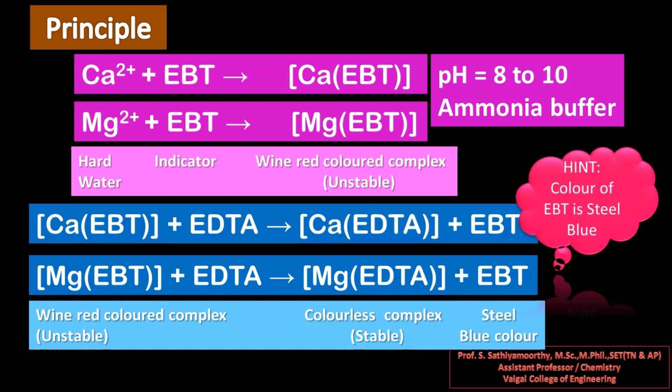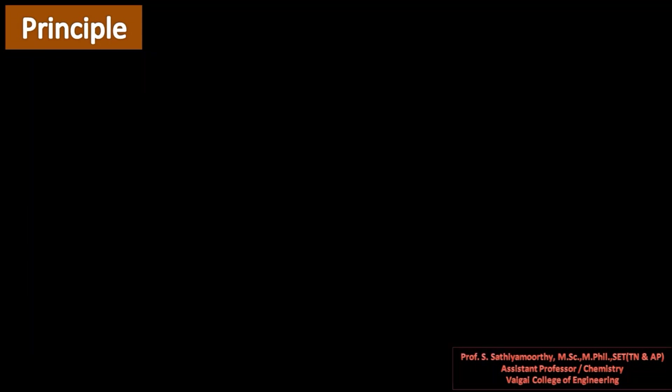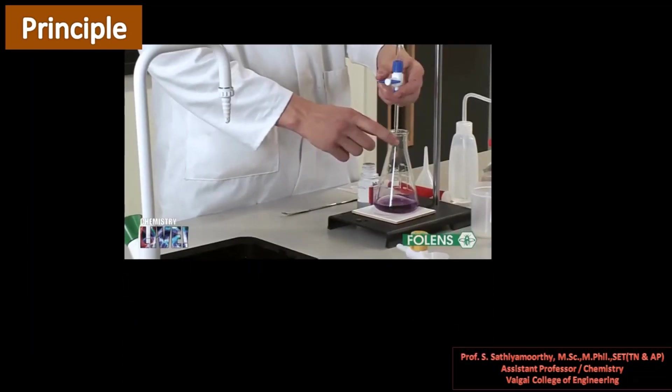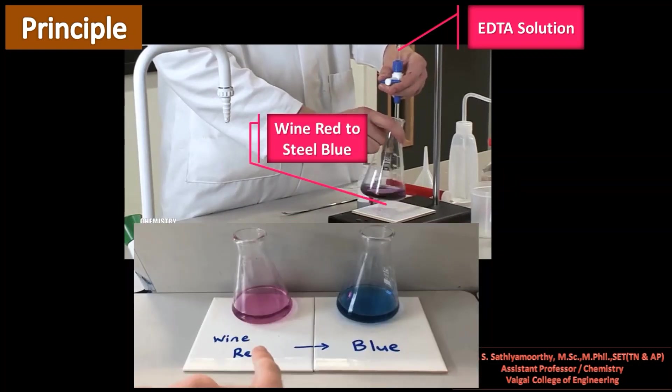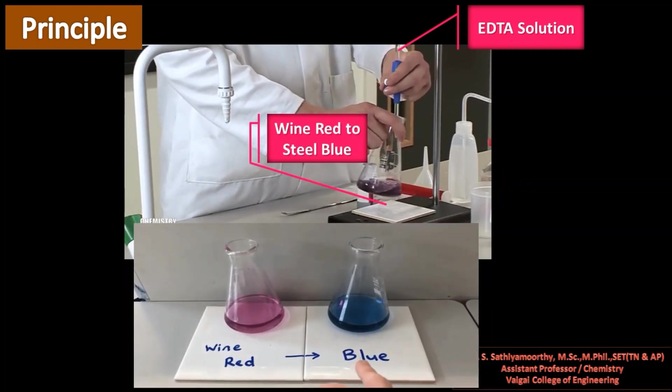Concentrated EBT is dark blue in color, and in diluted portions at this pH range the color of EBT is steel blue. Hence we see the color change from wine red to steel blue during the titration. This complex formation is utilized as the principle, and this color change is used to identify the endpoint and titer value.